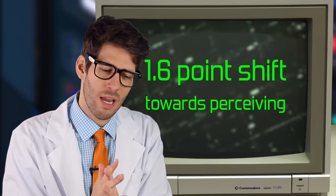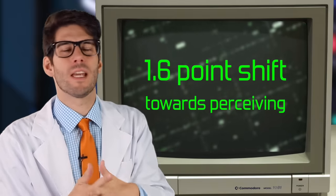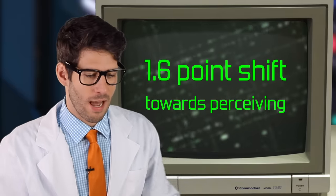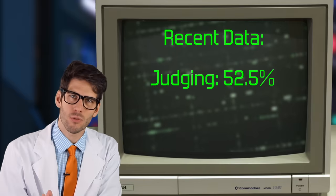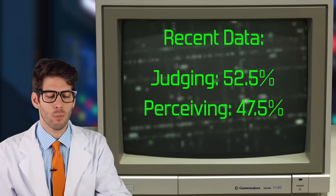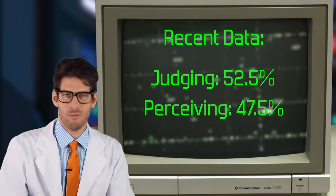And then we come to the last one, J or P, judging or perceiving. The judges are a little bit more planned out and organized. The perceivers a little bit more spontaneous. This one has stayed pretty much the same with only 1.6% change over time. 52.5% are judges and 47.5% are perceivers.